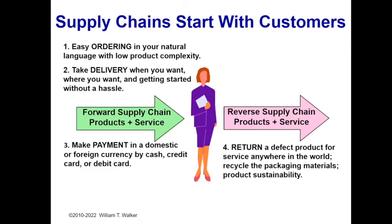Thirdly, they want to be able to pay for the product the way they want to — domestic or foreign currency, cash, credit cards, debit cards, digital wallet, whatever. And then sometimes, unfortunately, you have to return a product, and when you do, you work through the reverse supply chain. You'd like to be able to send it back from anywhere in the world, figure out how to package it and get it back, and also deal with product sustainability. This is very relevant — most of the students I teach at NYU in industrial engineering are from India or China, so English is not their primary language, and they may want to pay in different ways.